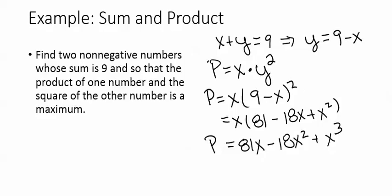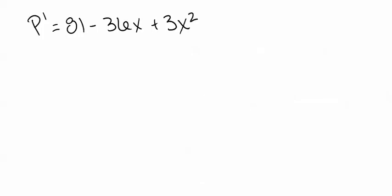In order to find our maximum, we're going to try to find our critical point. So we're going to take the derivative, we're going to find p prime, which would be 81 minus 36x plus 3x squared. So I switch my derivative over to a new page. Our maximum, remember, is going to occur when this equals 0.